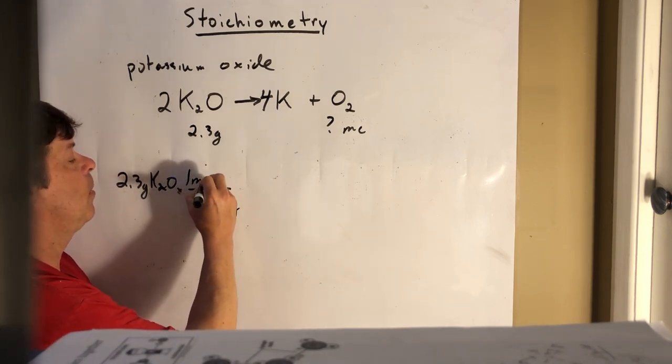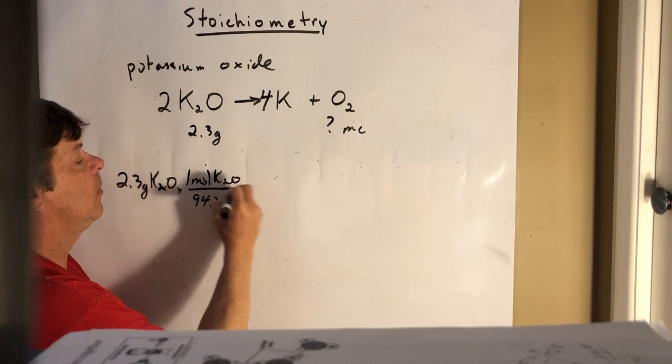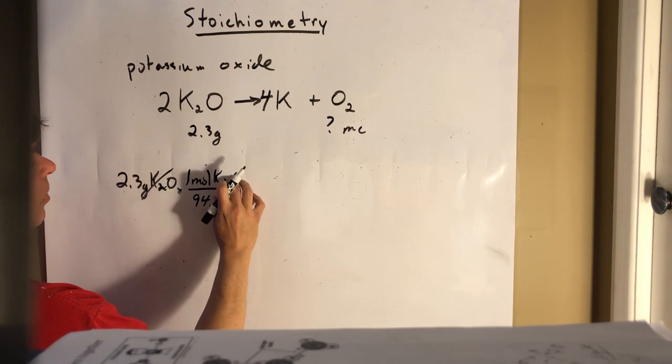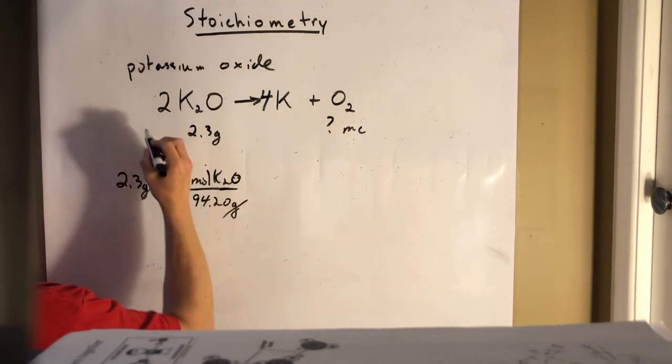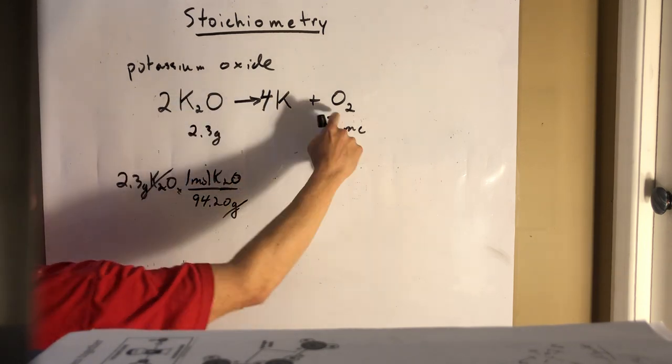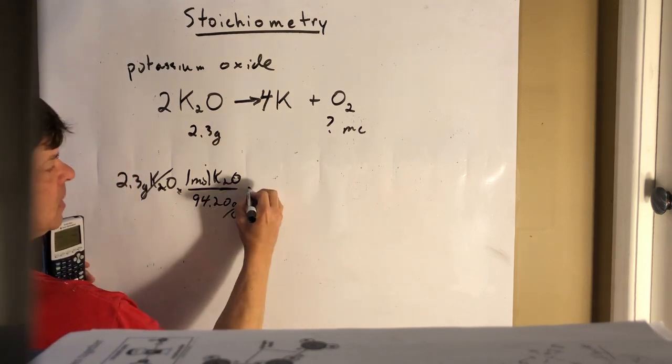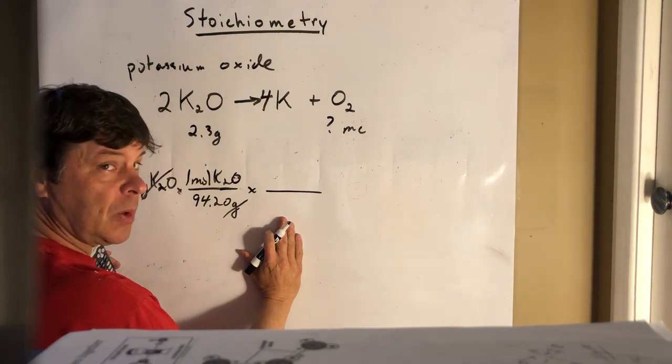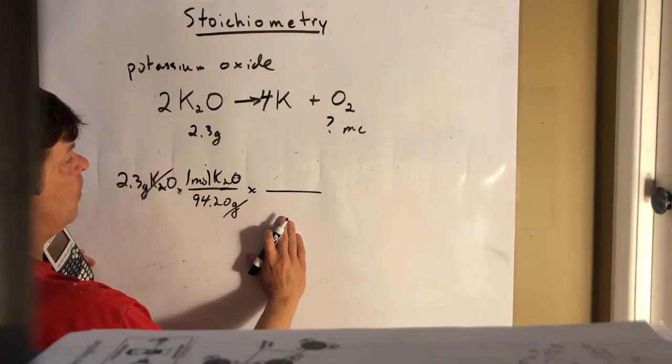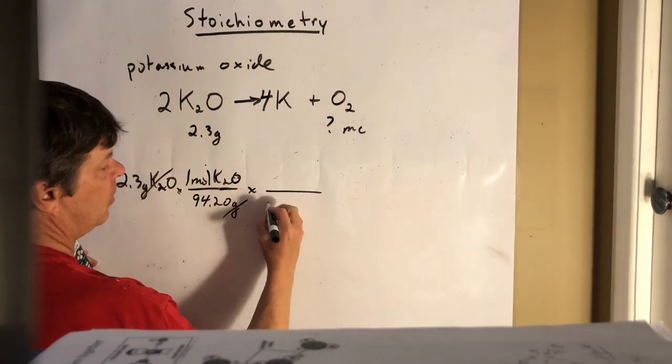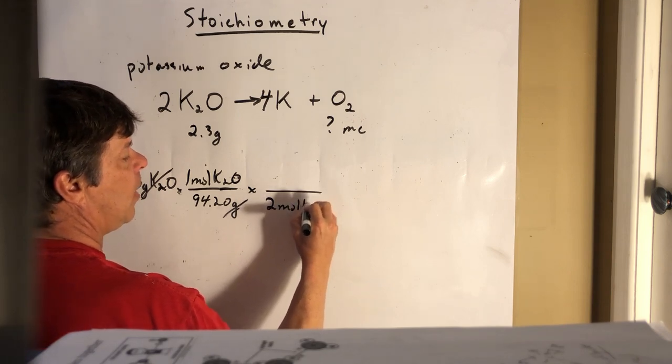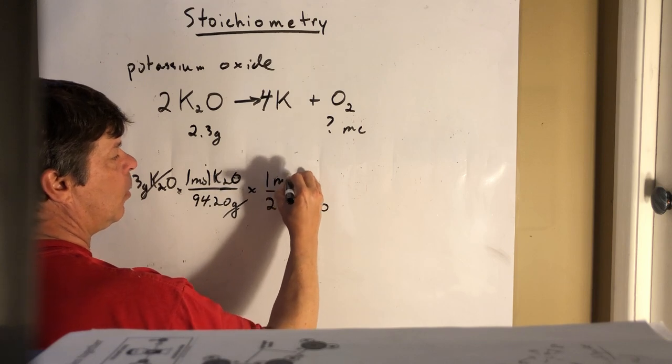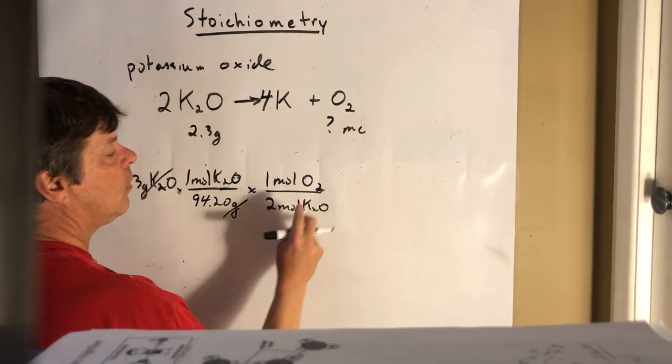All right, those grams cancel out. Now what we can do is take advantage of this ratio. We know for every two of these we get one oxygen. So this is the new part, this is the only thing that's new in stoichiometry. So the two goes in the bottom, two goes with the potassium oxide, and that's chemically equivalent to one mole of oxygen. For every two of these we get one of those.